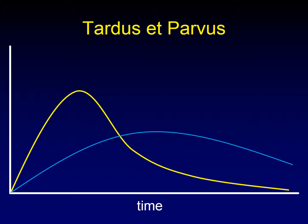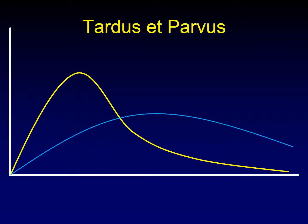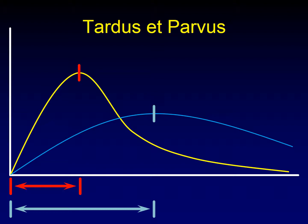What effect does this have on our parameters when we have obstruction to flow? Let's take the first parameter: time to peak. There's time to peak on the normal curve — but on the tardus-parvus curve it takes a lot longer to peak, so the amount of time to peak is greater. Increased time to peak is what we expect with obstruction of flow.